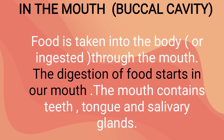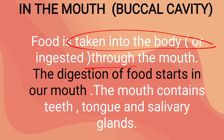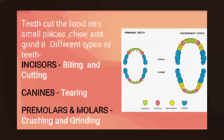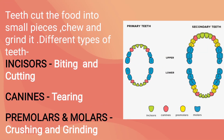We will start the human digestive system with the mouth. Food is taken into the body through the mouth, and digestion of food starts here. The mouth contains teeth, tongue and salivary glands. Teeth cut the food into small pieces, chew and grind it. The different types of teeth are incisors, canines, premolars and molars.